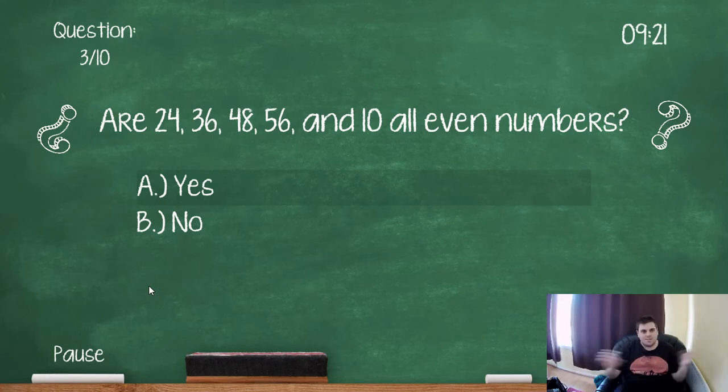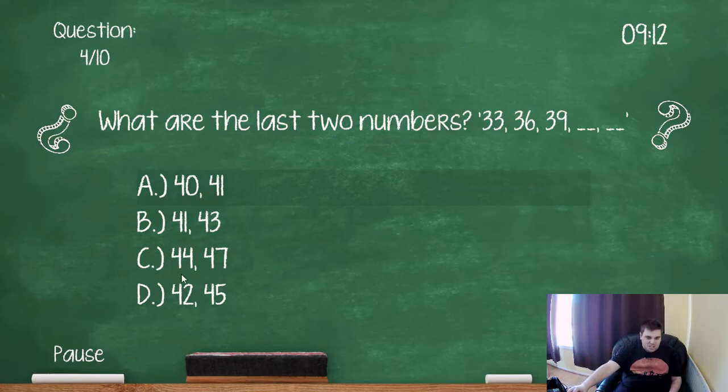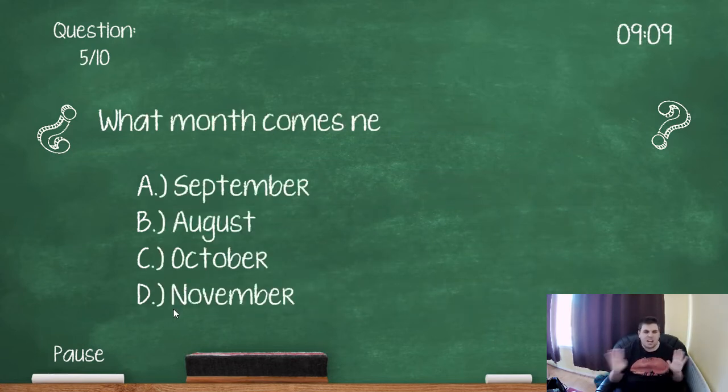What are the last two numbers? 33, 36, 39, 42, 45. It's getting up in threes. I feel so clever.